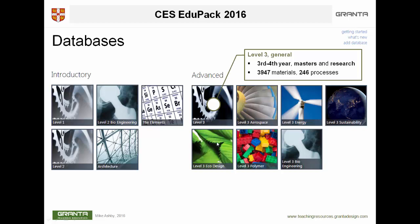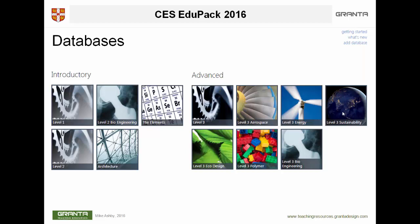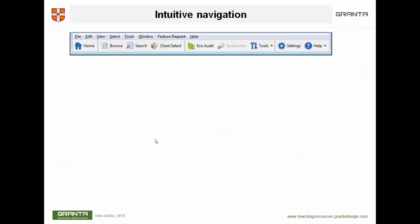The Level 3 database contains nearly 4,000 materials and 246 processes, so it's much bigger. It's not a very good place to start because there's so much information there, but when students are doing projects and they need real data for real materials, then this is the place to go. A particularly exciting one is the sustainability database.